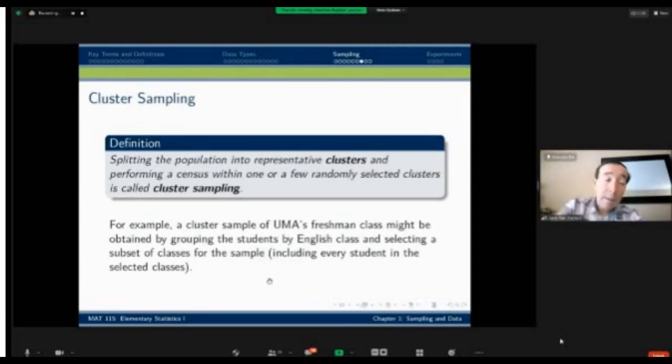Cluster sampling is often confused with stratified sampling because there's some similarities. So I'm going to try to emphasize the differences here as well. When we do cluster sampling, we take the entire population and we split them up into representative clusters. So we're separating the entire population into distinct groups. That's a similarity with the stratified sampling. But rather than collecting a small number from every group, which is what we do for stratified sampling, we randomly select which clusters to include and then we include everyone in those clusters.